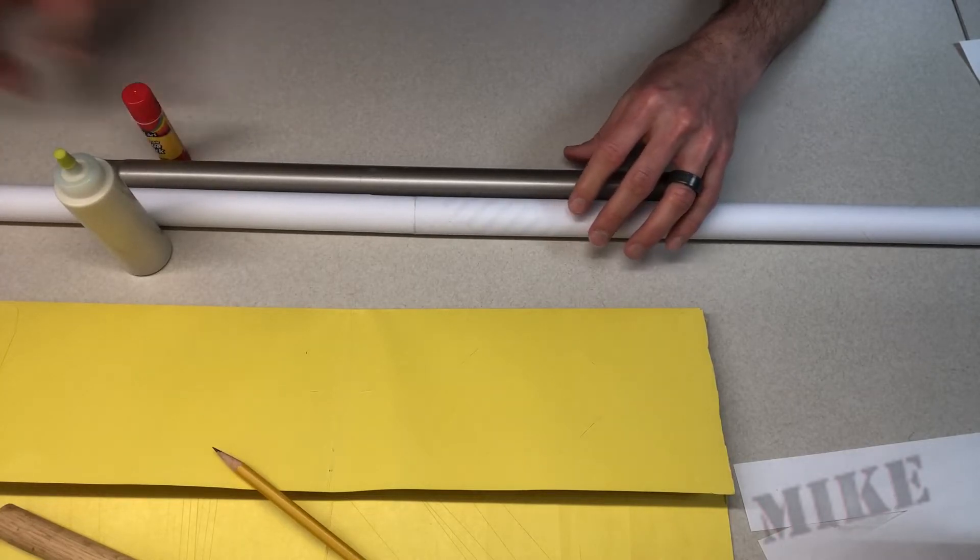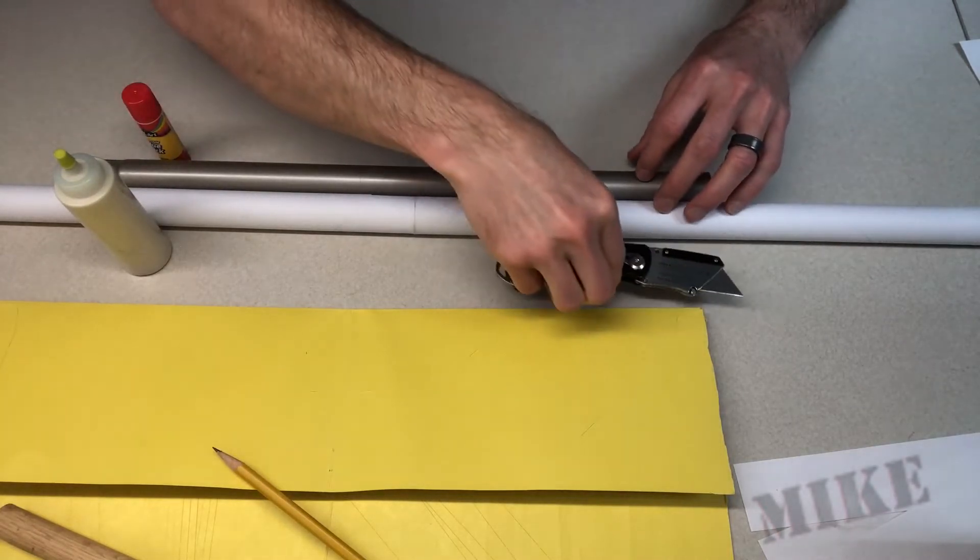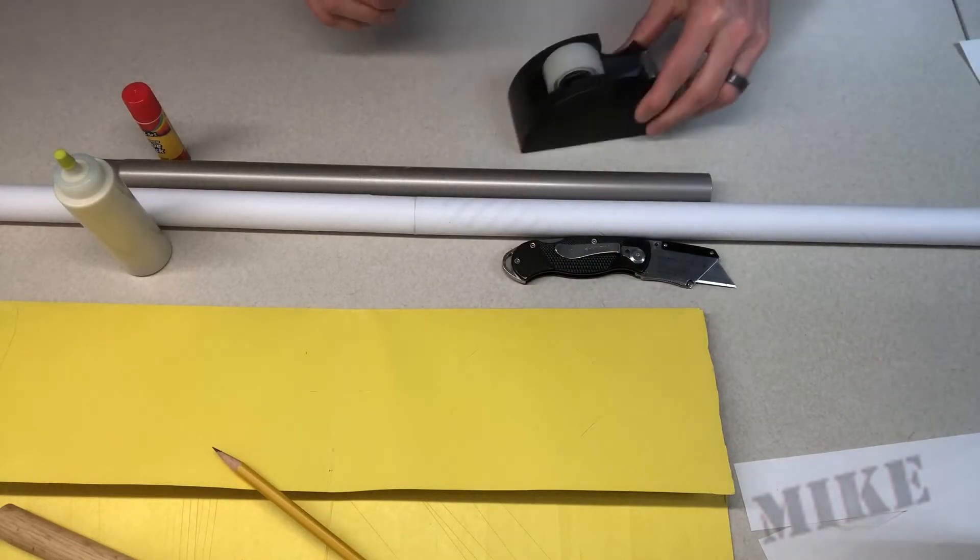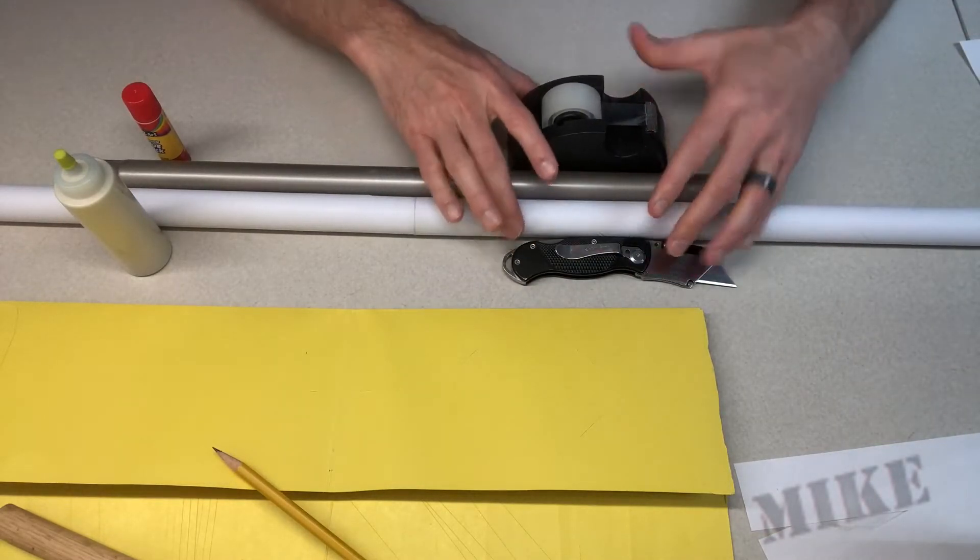And stick them together just like so, rotating it while I push it together so that the glue gets evenly distributed. Now I got to make sure it dries straight. Obviously this desktop is straight but I need to keep it straight in another dimension. So I'm going to use the mandrel that I wound it on to hold it up against there.